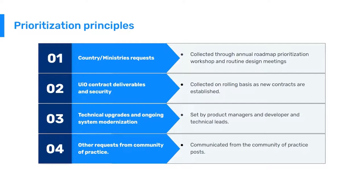For the roadmap and prioritization process we follow a ranking of four kinds of inputs. First, country and ministry requests, collected through the annual roadmap prioritization workshop and by attending routine design meetings on specific features and functionality that have been requested. Second, contract deliverables and security requirements that come through the various partnerships we have.